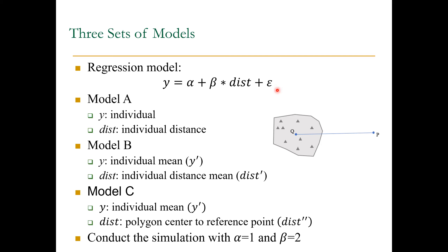The first model is the individual-level model — Model A. We have all the information at the individual level. Y is the dependent variable and we have information about each individual. We are also able to measure for each individual the distance to certain amenities or a point. That's the ideal model where we have information about each individual.